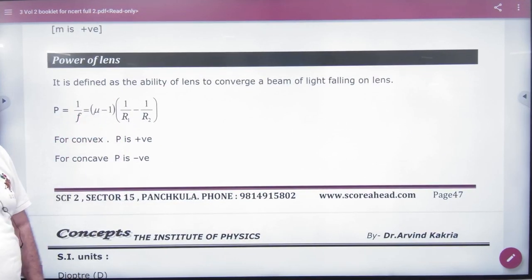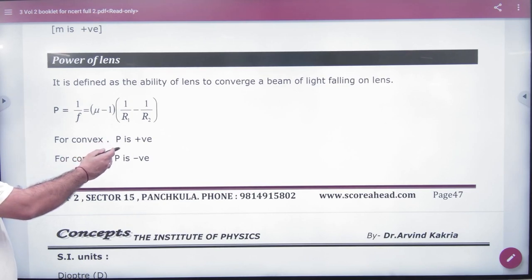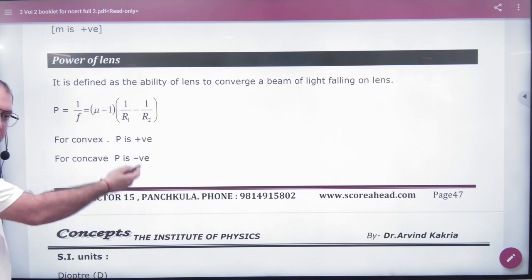We know from lens maker, the power formula is one upon focal length. Note this formula: P equals one by F equals mu minus one into one by R1 minus one by R2. The power value has come. Power is positive because focal length is positive for convex. If the focal length is negative, then power is negative.